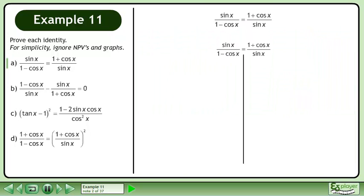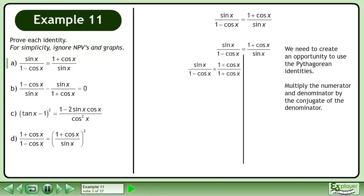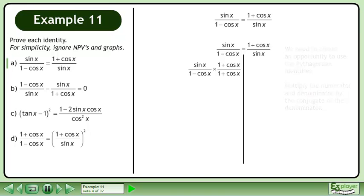We write the statement and draw a line. We need to create an opportunity to use the Pythagorean identities. Multiply the numerator and denominator by the conjugate of the denominator. Multiply the fractions. The denominator becomes 1 minus cos²x.